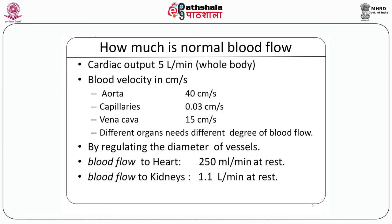The total blood flow to the body is about 5 litres per minute. This is called the cardiac output. The same amount goes to the lungs as well. The velocity of blood varies in different vessels depending on pressure and diameters. Different organs need different amounts of blood flow depending on their needs. Therefore, it is a beautiful arrangement.